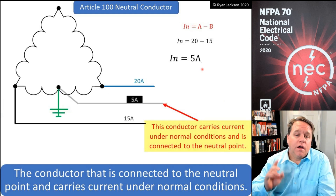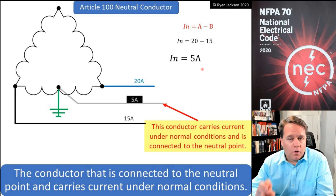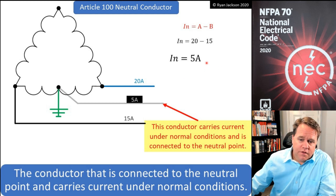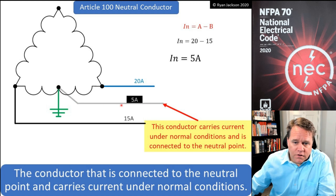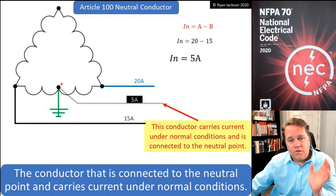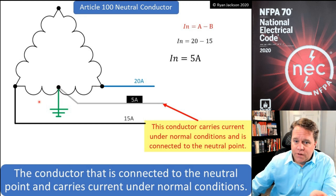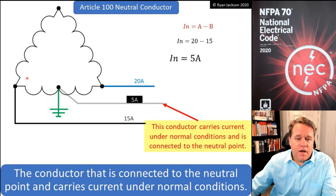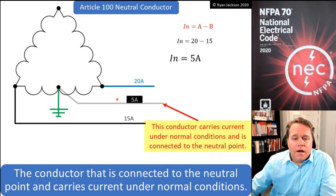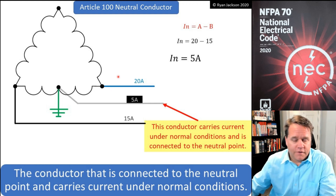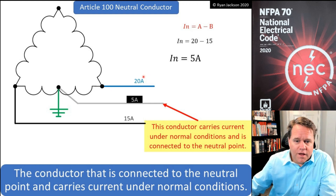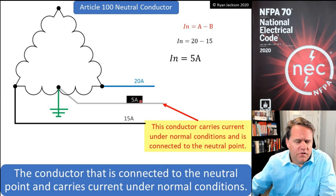On a three-phase four-wire delta connected system, the neutral conductor is connected to the neutral point and carries current under normal conditions — that's a neutral conductor. To determine the neutral current on this system, you simply take Phase A minus Phase B, and that difference is your neutral current. So with 20 amps on one phase and 15 amps on the other, you have 5 amps on the neutral — nice and easy.